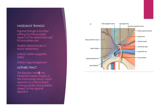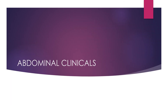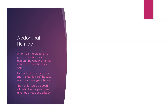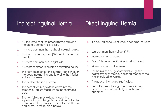The iliopubic tract is a fibrous band running parallel and posterior to the inguinal ligament, representing the thickened inferior edge of the fascia transversalis.